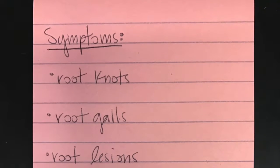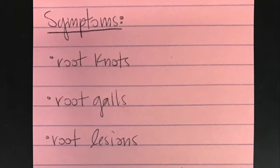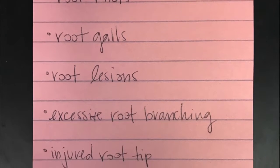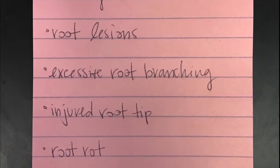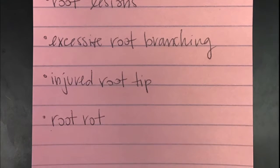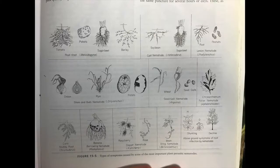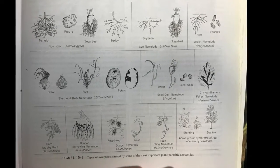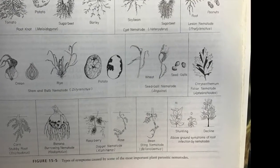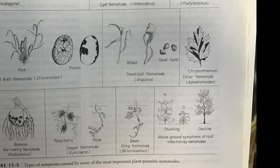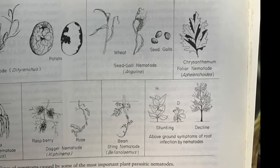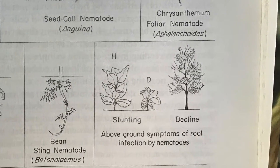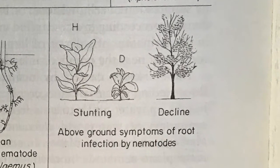The symptoms that occur on the roots include root knots, root galls, root lesions, excessive root branching, injured root tips, and root rot. These root symptoms are usually accompanied by non-characteristic symptoms on above-ground plant parts, such as reduced growth, yellowing, excessive wilting, reduced yields, and poor quality of products.